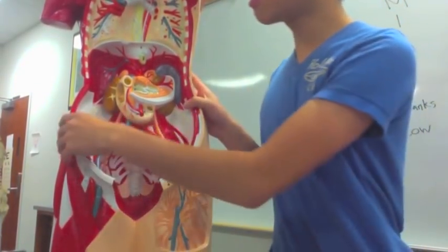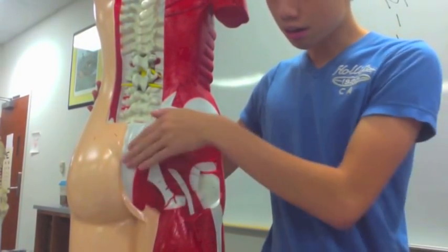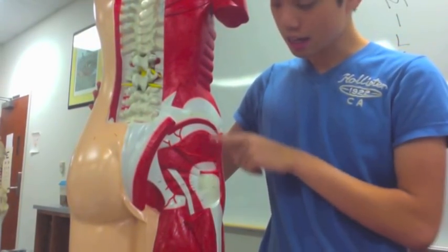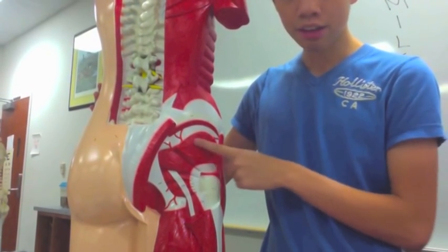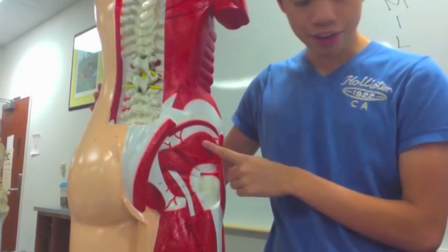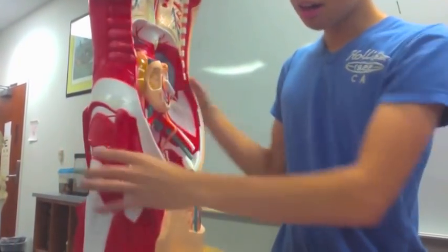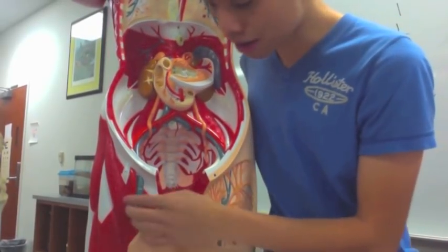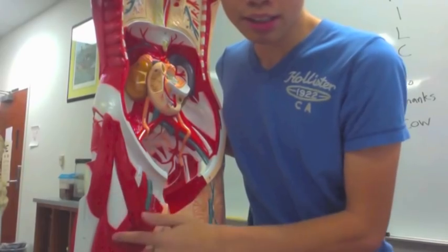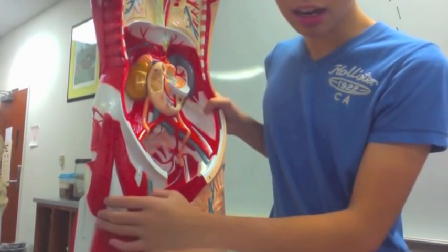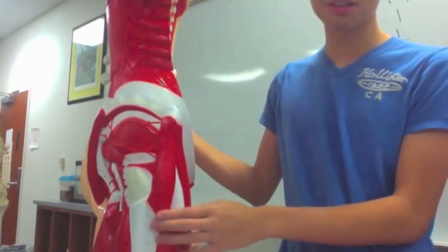You need to know the gluteus maximus, which goes across like this. The gluteus medius is this one right here. Then you have the gluteus minimus and the piriformis, which is the bottom one. On your leg you have the sartorius, which is the one that wraps around, the rectus femoris, and on the side the tensor fasciae latae with that long tendon.